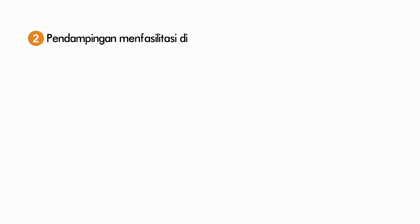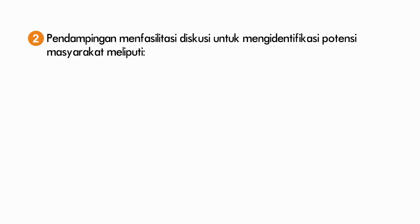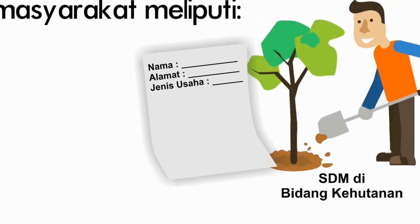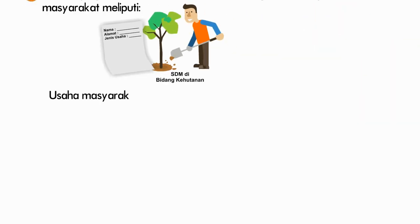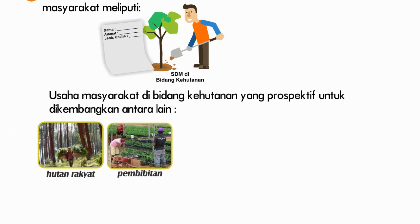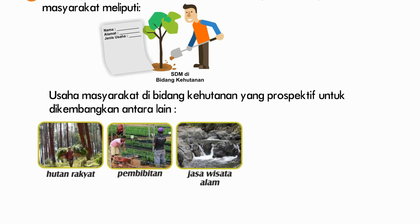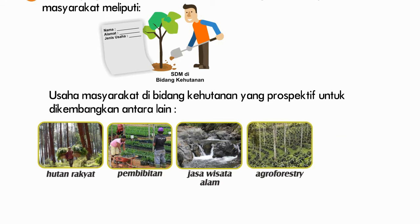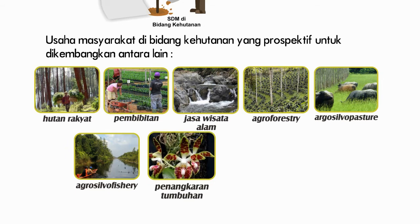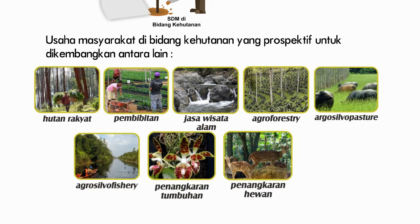2. Pendamping memfasilitasi diskusi untuk mengidentifikasi potensi masyarakat meliputi sumber daya manusia yang melaksanakan kegiatan di bidang kehutanan antara lain nama, alamat, jenis usaha di bidang kehutanan; usaha masyarakat di bidang kehutanan yang prospektif untuk dikembangkan antara lain hutan rakyat, pembibitan tanaman kehutanan, pemanfaatan jasa lingkungan dan wisata alam, agroforestry, agrosilvopasture, agrosilvofisery, pemanfaatan dan penangkaran tumbuhan dan satwa liar, serta pemanfaatan dan pengembangan hasil hutan kayu atau HHBK.